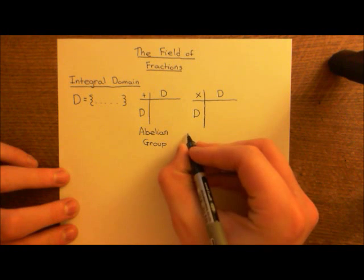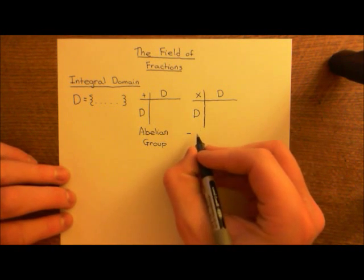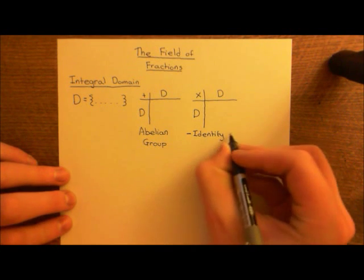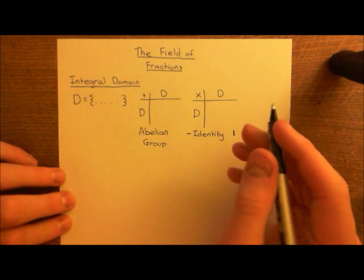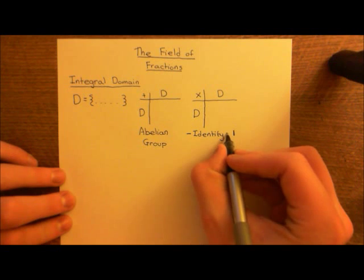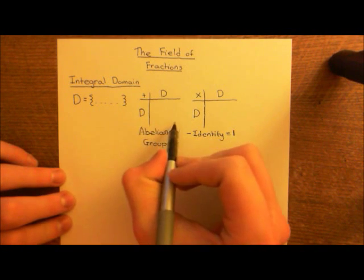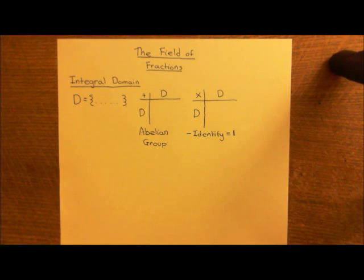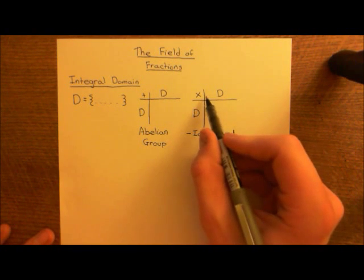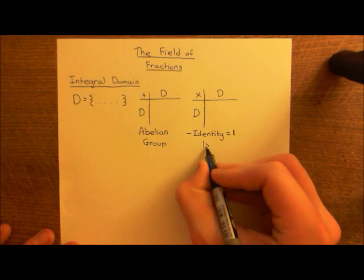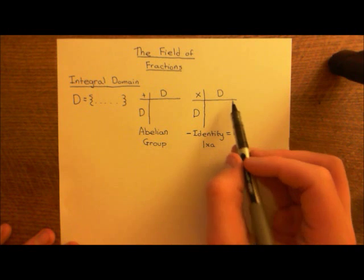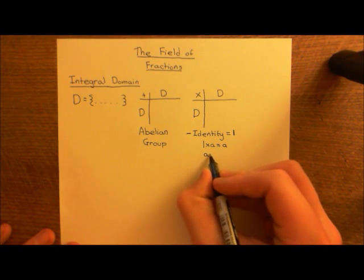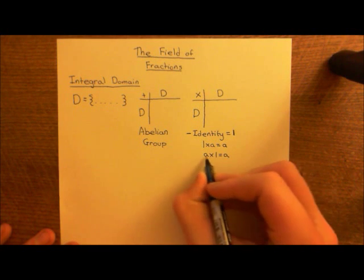If you insist on distributivity, you can't also get multiplication to obey a full group structure. The closest you can get is when it obeys the axioms of field theory. For a ring, multiplication needs: an identity element (usually denoted 1, just as the additive identity is denoted 0), meaning 1 times a equals a and a times 1 equals a for any element a in the domain.